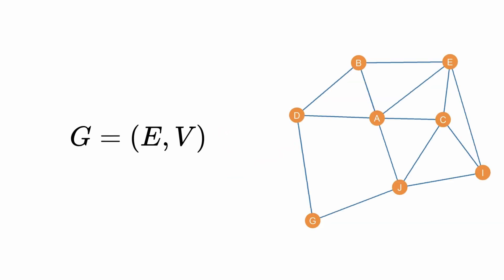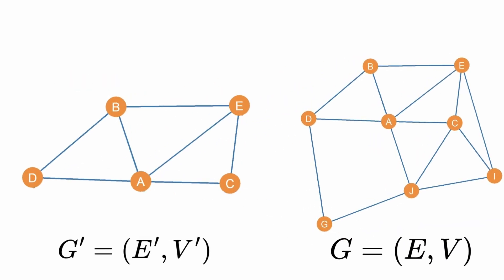The set of a graph's vertices is called its vertex set, and the set of its edges is called its edge set. You can build a new graph using subsets of these vertex and edge sets. The result is called a subgraph of the original graph.